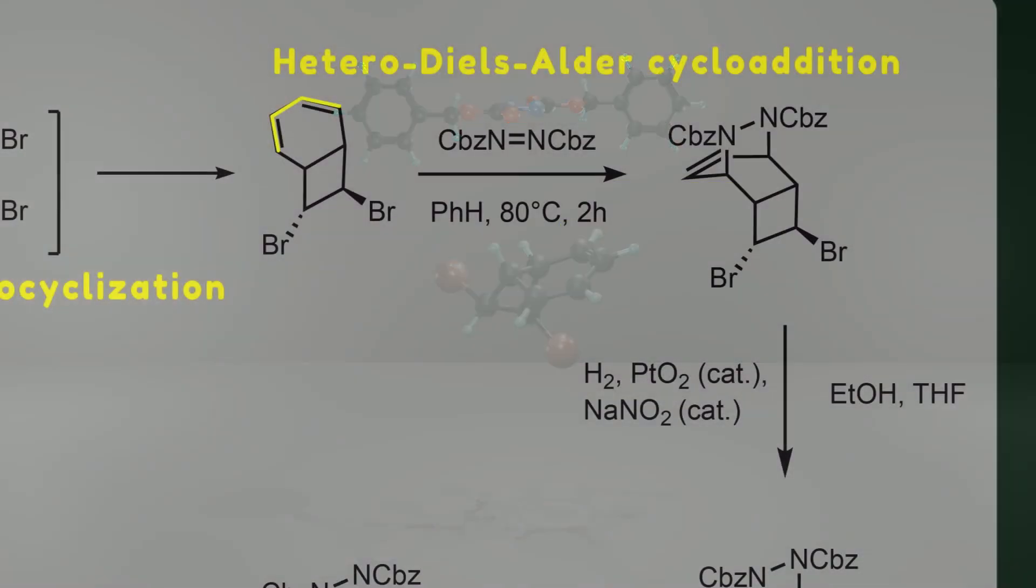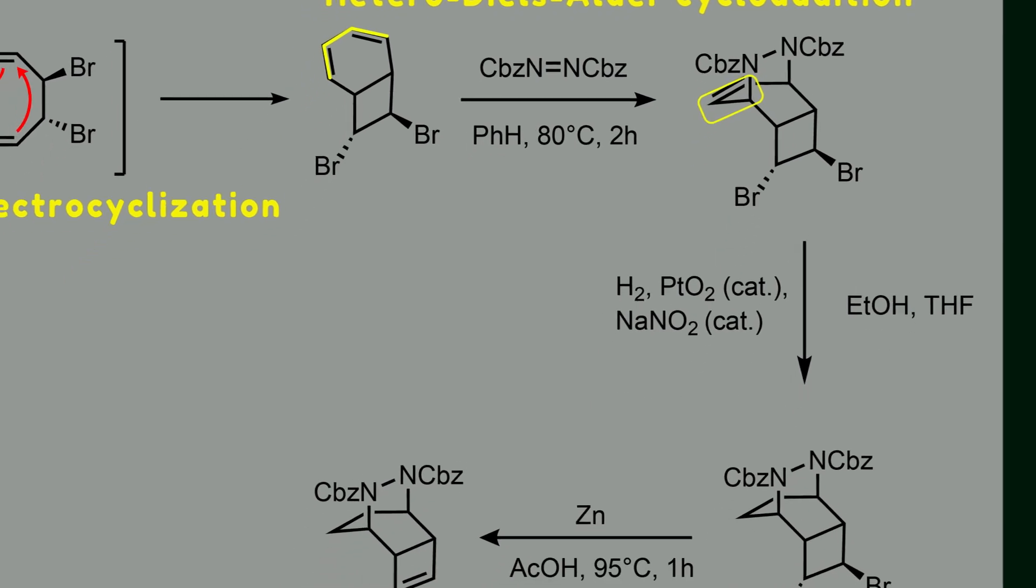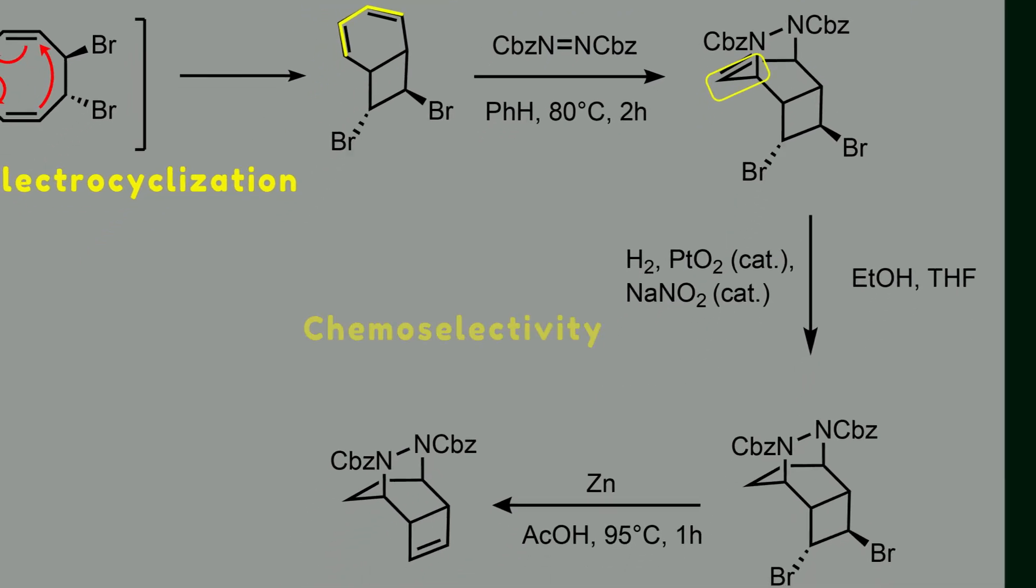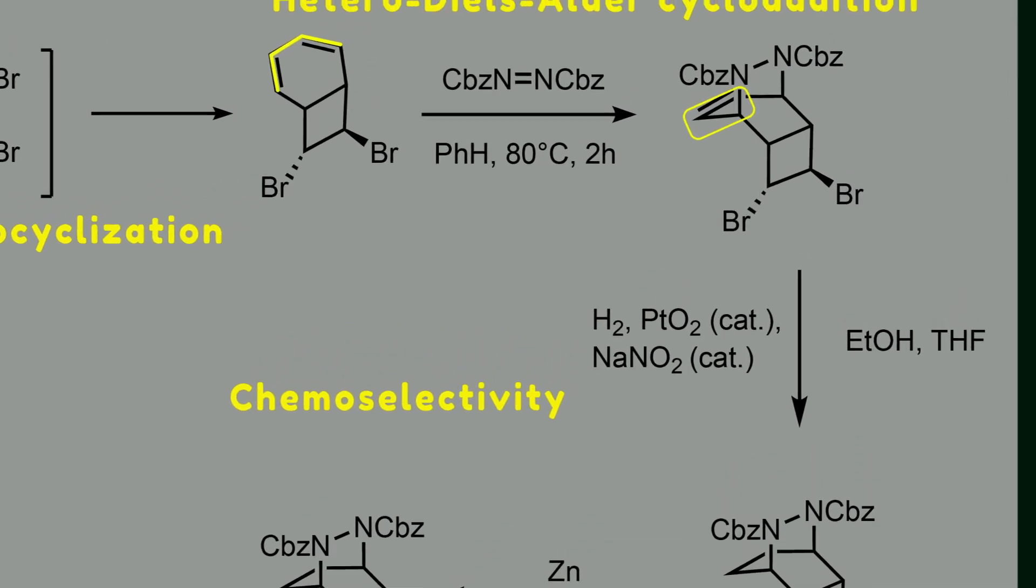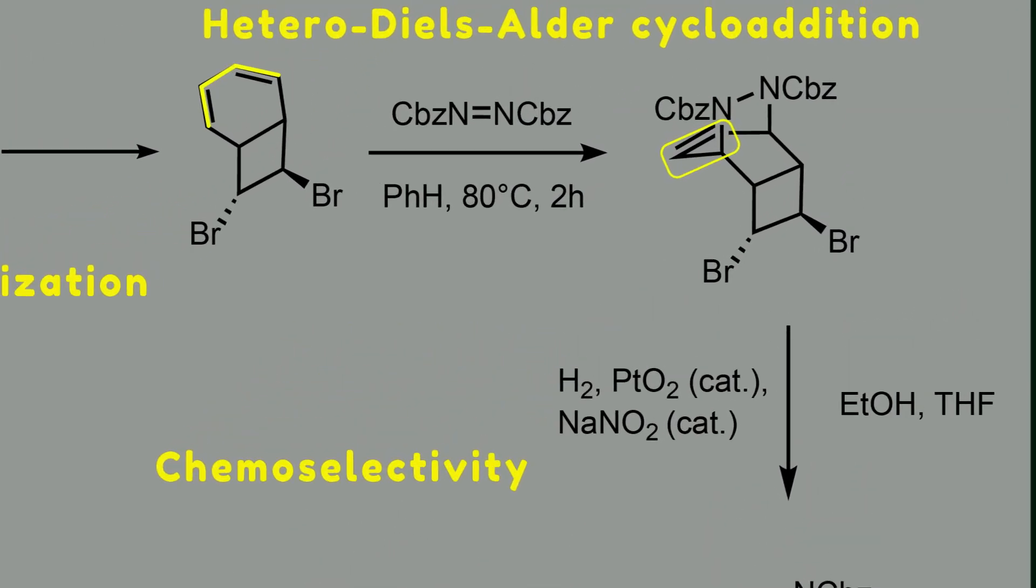The next step is hydrogenation of this double bond, but it's easier said than done. In this step, we face chemoselectivity. In other words, there are functionalities which potentially can undergo hydrogenation, namely two bromide substituents, a weak nitrogen-nitrogen bond, and two CBZ protecting groups.